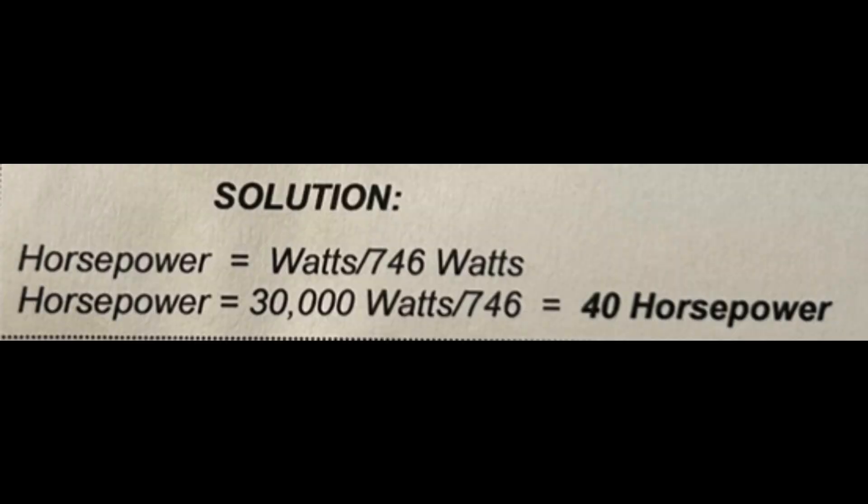Question 58. What size motor is required to produce 30kW output? 40hp. Motor hp-to-kW ratio: one hp motor produces 0.75kW. So a 40hp motor is used to produce 30kW.